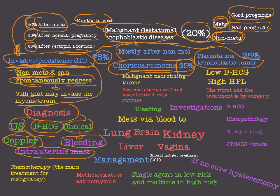Choriocarcinoma represents about 25% of all malignant GTD. In contrast to the invasive type, choriocarcinoma mostly happens after a non-molar pregnancy. The invasive or persistent type mostly happens after molar pregnancy, but choriocarcinoma mostly happens after non-molar pregnancy.